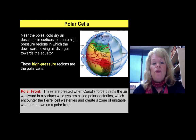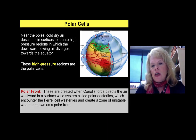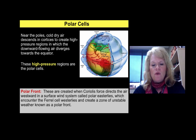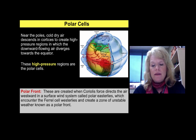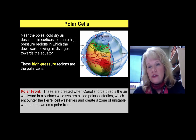Polar cells occur when dry, cold air descends from the poles and creates a high-pressure region where the downflowing air diverges towards the equator. When a weather pattern migrates down into North America, that's called a polar front. The Coriolis force directs polar cell air masses westward in a southern wind system called polar easterlies. When they encounter the Ferrel cells, they create a zone of unstable weather known as the polar front — areas like the Pacific Northwest can be subjected to polar fronts.